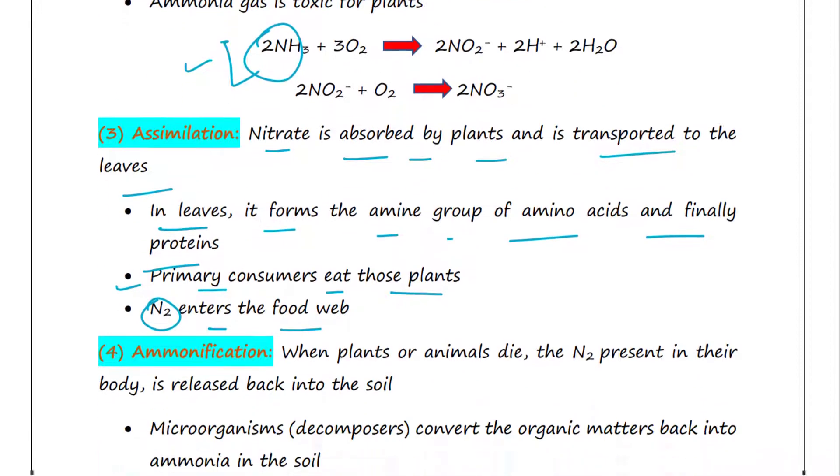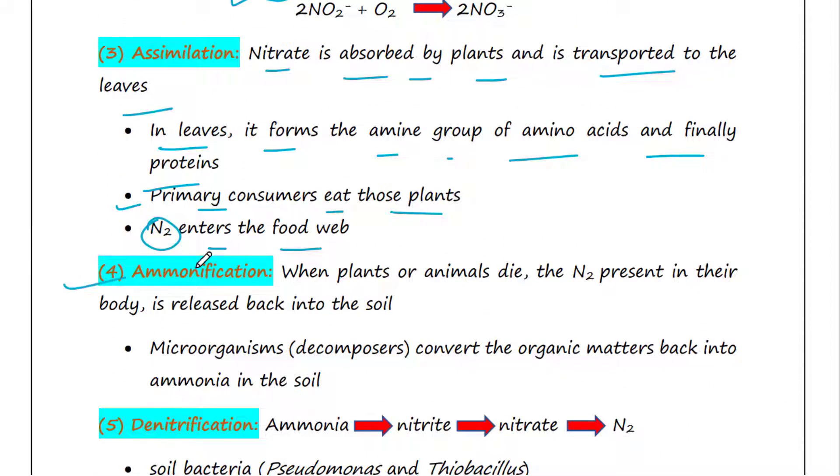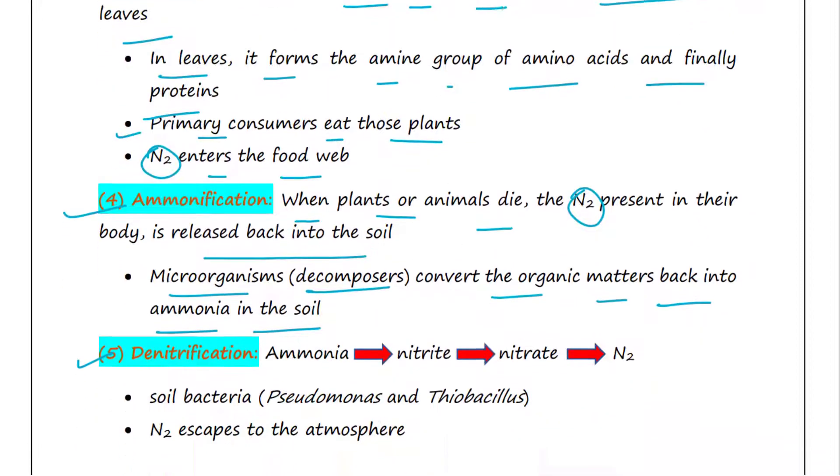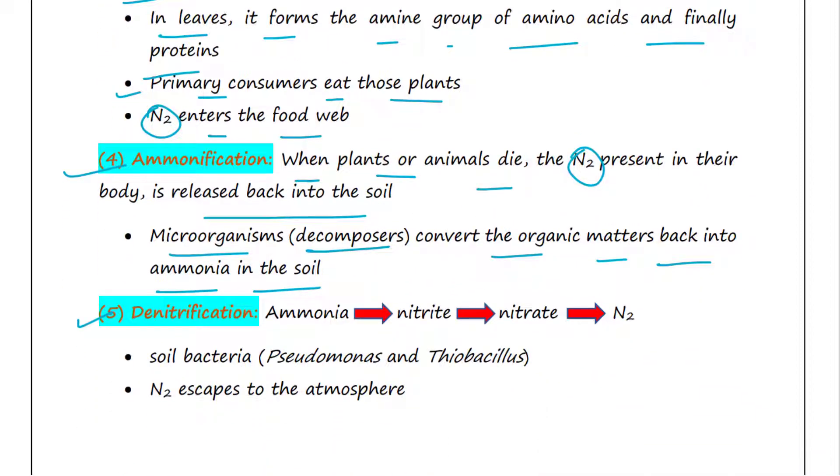The next step is ammonification. When plants or animals die, the nitrogen present in their body in the form of various organic matters is released back into the soil. Microorganisms called decomposers convert the organic matters back into ammonia in the soil.